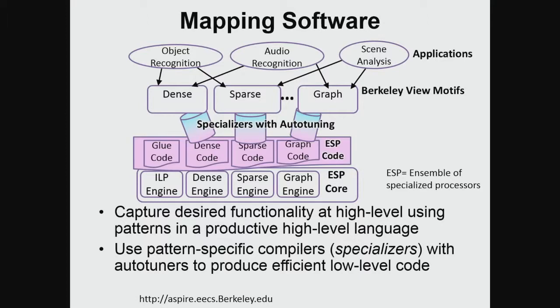That's the basic idea. However, we still have to be able to build these domain-specific chips. They are not as specialized as pure ASICs, but they're still specific and we have to build them at a reasonable cost. The search space is smaller, but we need another advance here — which leads to the idea of agile design.